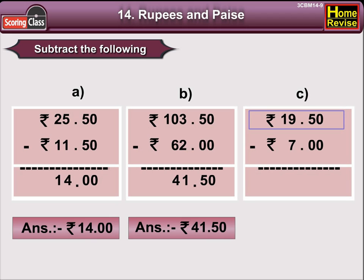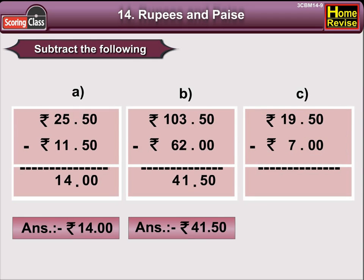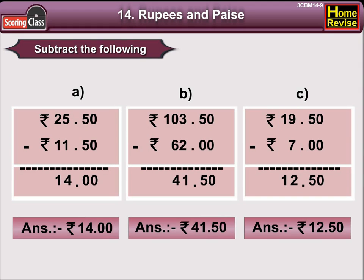C. Rupees 19 and 50 paisa minus Rupees 7. 0 minus 0 is 0. 5 minus 0 is 5. Now, 9 minus 7 is 2 and we will bring down 1. So, the answer is Rupees 12 and 50 paisa.